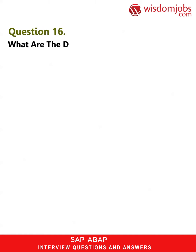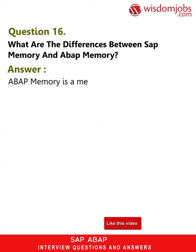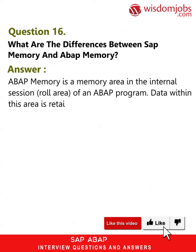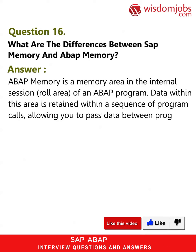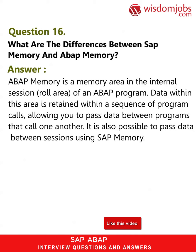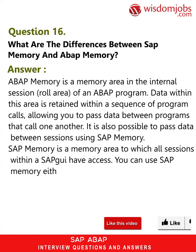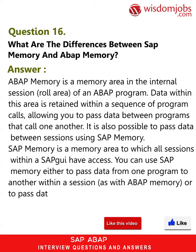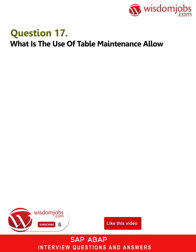Question 16: What are the differences between SAP memory and ABAP memory? ABAP memory is a memory area in the internal session role area of an ABAP program. Data within this area is retained within a sequence of program calls, allowing you to pass data between programs that call one another. It is also possible to pass data between sessions using SAP memory. SAP memory is a memory area to which all sessions within SAP have access. You can use SAP memory either to pass data from one program to another within a session, as with ABAP memory, or to pass data from one session to another.